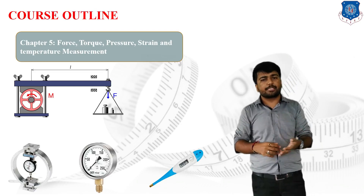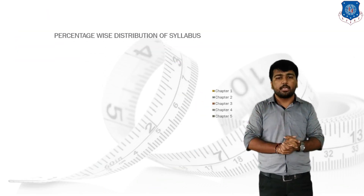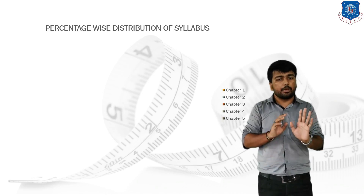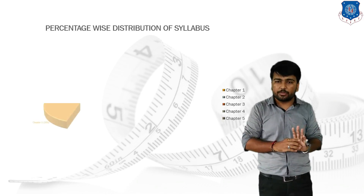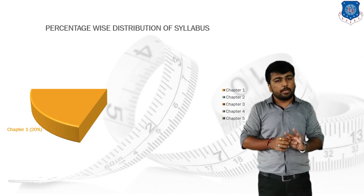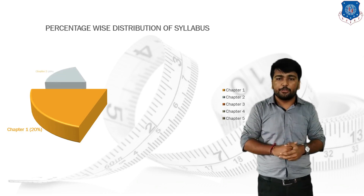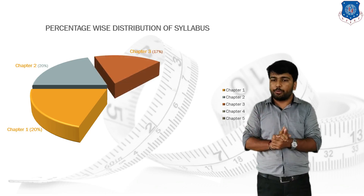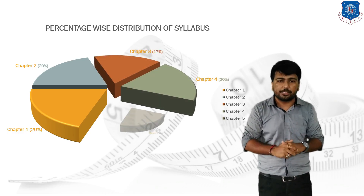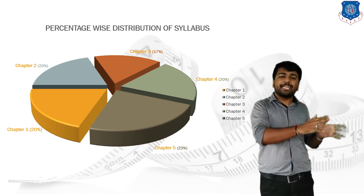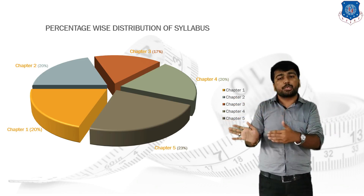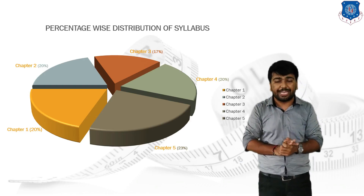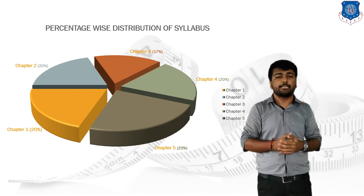Now we will discuss the percentage-wise distribution across all 5 units. Unit 1 contains 20% weightage, Unit 2 contains 20%, Unit 3 contains 17%, Unit 4 contains 20%, and Unit 5 contains 23%. Each unit has roughly equal distribution, and every unit is very important in terms of both mechanical measurement and metrology.